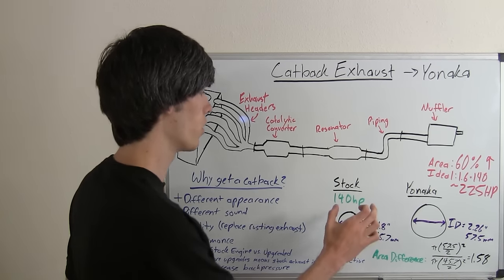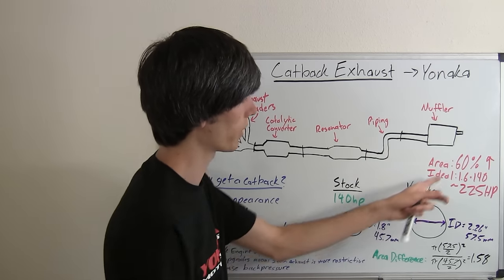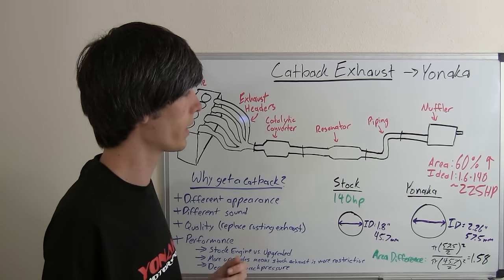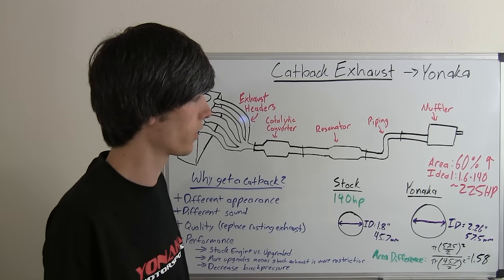And so going with the same theory that the engineers used, since the Yonaka is about 60% bigger, we can find out what an ideal horsepower range would be for this Yonaka cat-back exhaust.